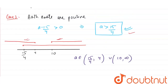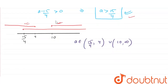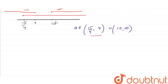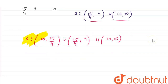For the final solution, we take the union of both cases. When one root is positive, A belongs to minus infinity to 15/4, and when both roots are positive, A belongs to 15/4 to 4 union 10 to infinity. Taking the union, the final solution is A belongs to minus infinity to 15/4, union 15/4 to 4, union 10 to infinity. This is the required solution.